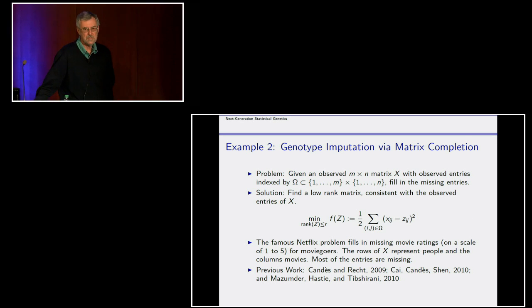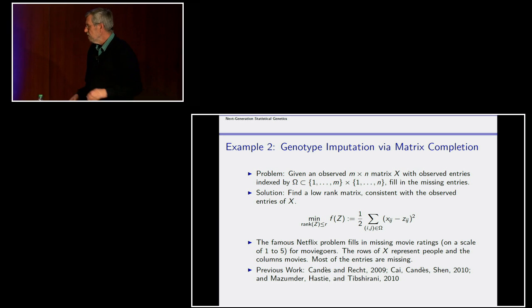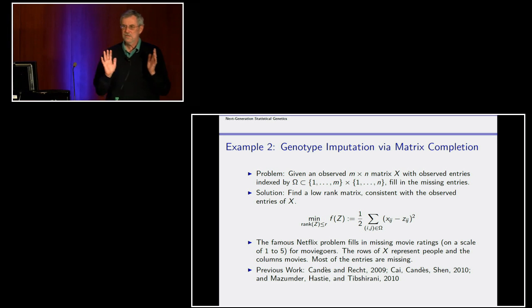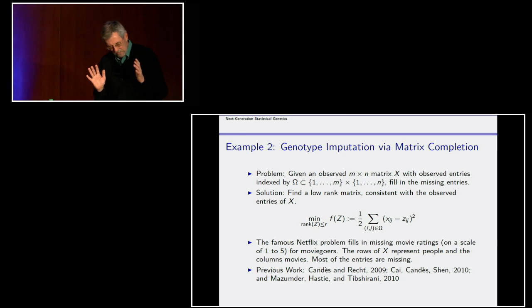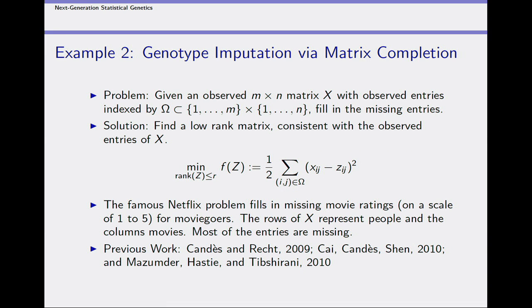A few years ago, a friend of mine named Emmanuel Candes at Stanford thought of a way to solve a problem he called matrix completion. The simplest example is the Netflix problem, which had a million-dollar prize. Netflix had a matrix with movie watchers on rows and movies on columns, and the entries were ratings from one to five. The matrix was very sparse because most people don't watch all 20,000 movies — they might rate only 20.